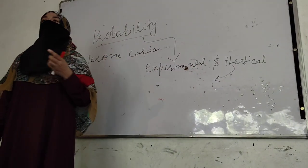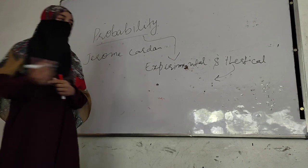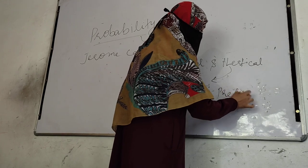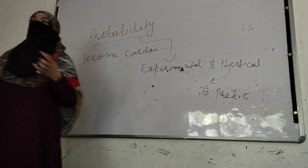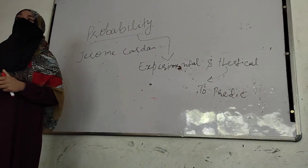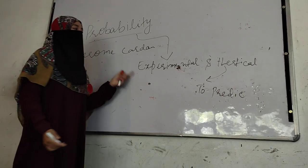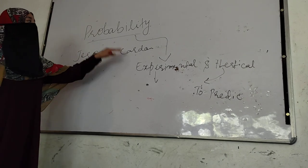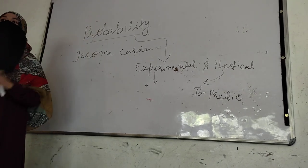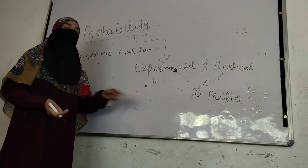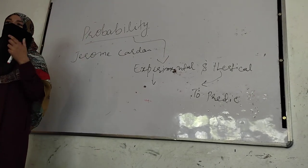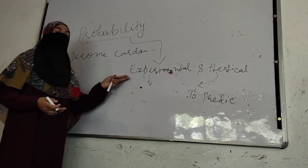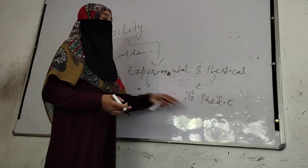Theoretical probability attempts to predict what will happen when an experiment is done. Experimental probability is the chance of happening an event — it looks at what has actually happened: when an experiment is done and what the outcome is, that is what experimental probability measures.